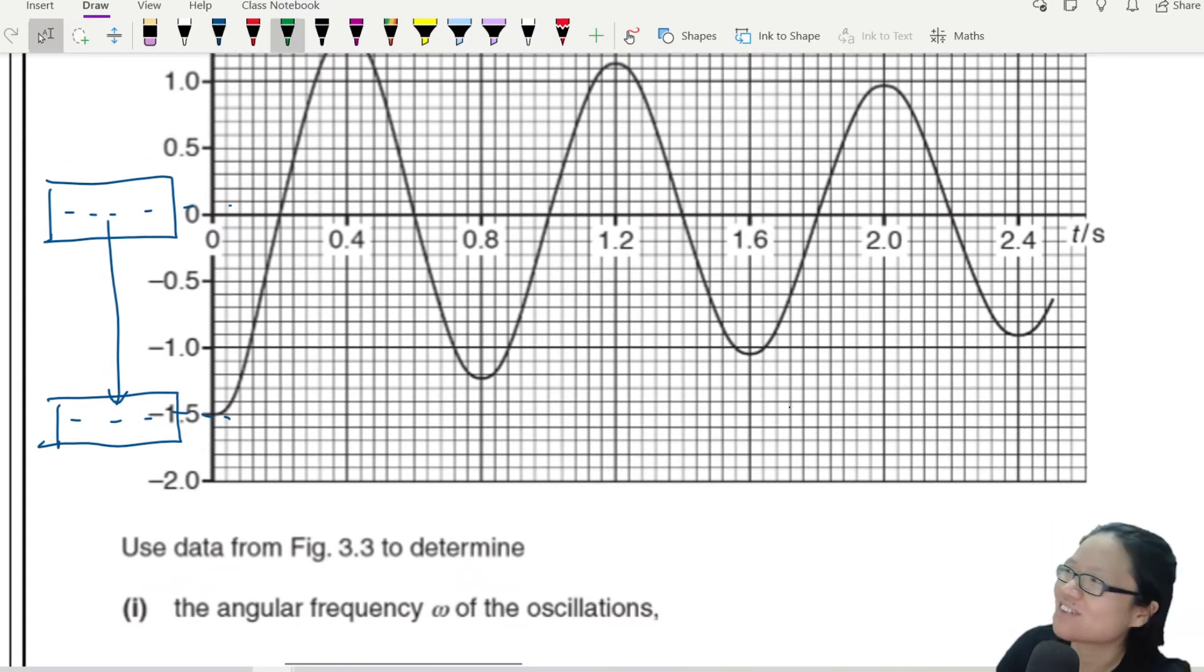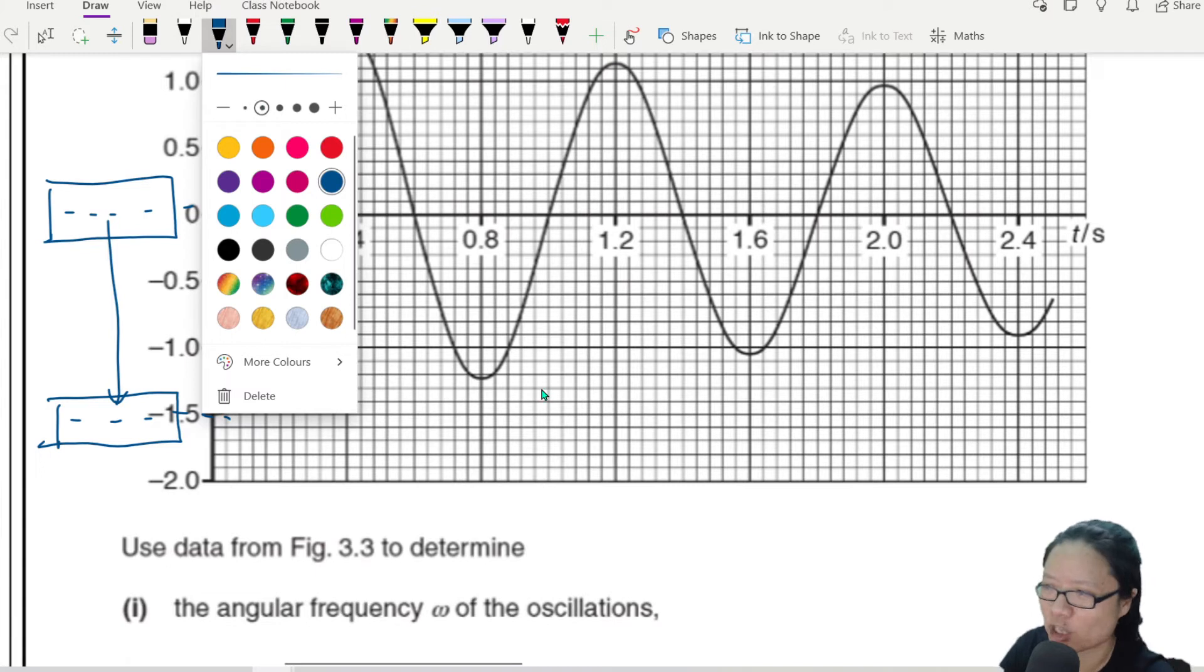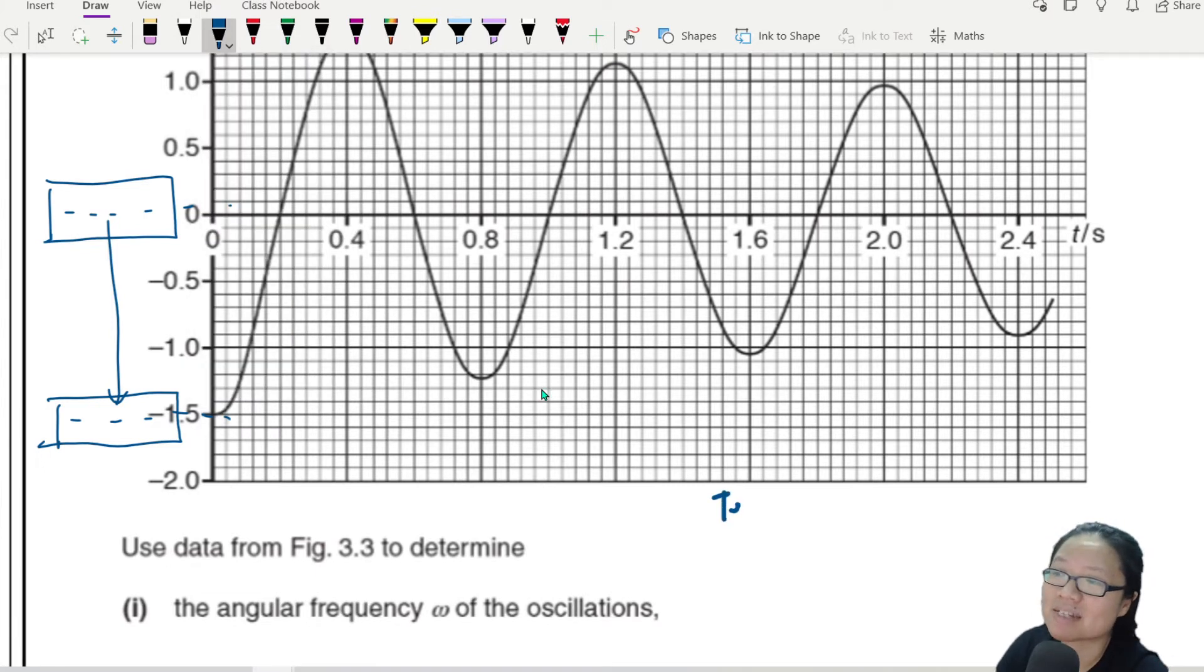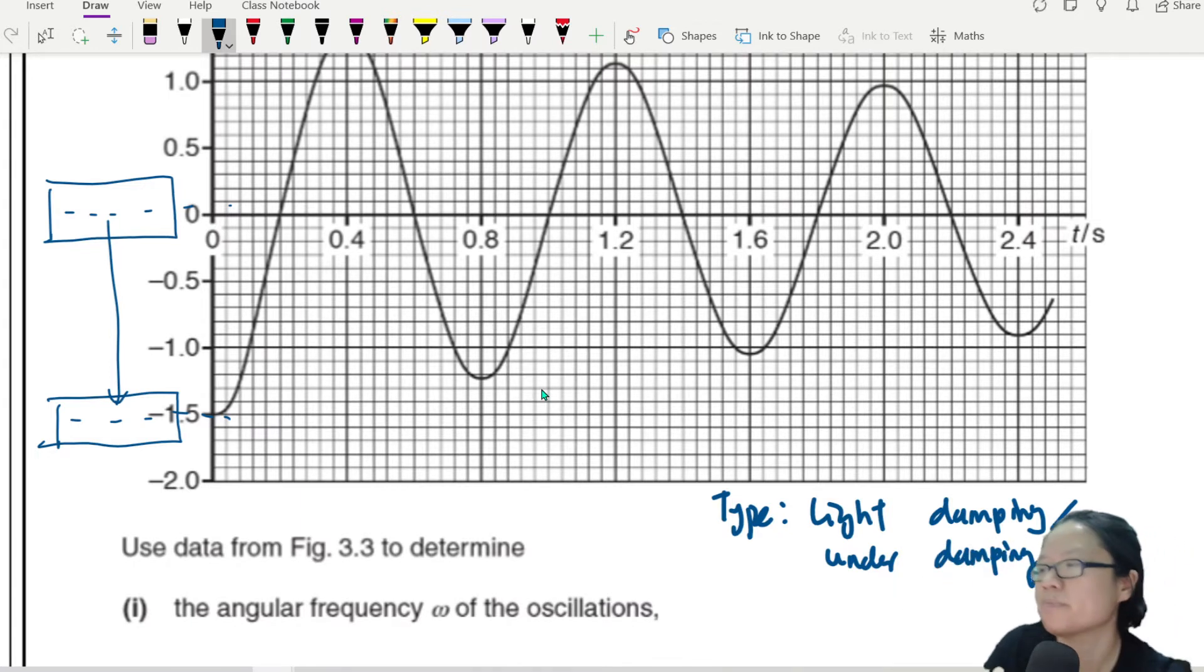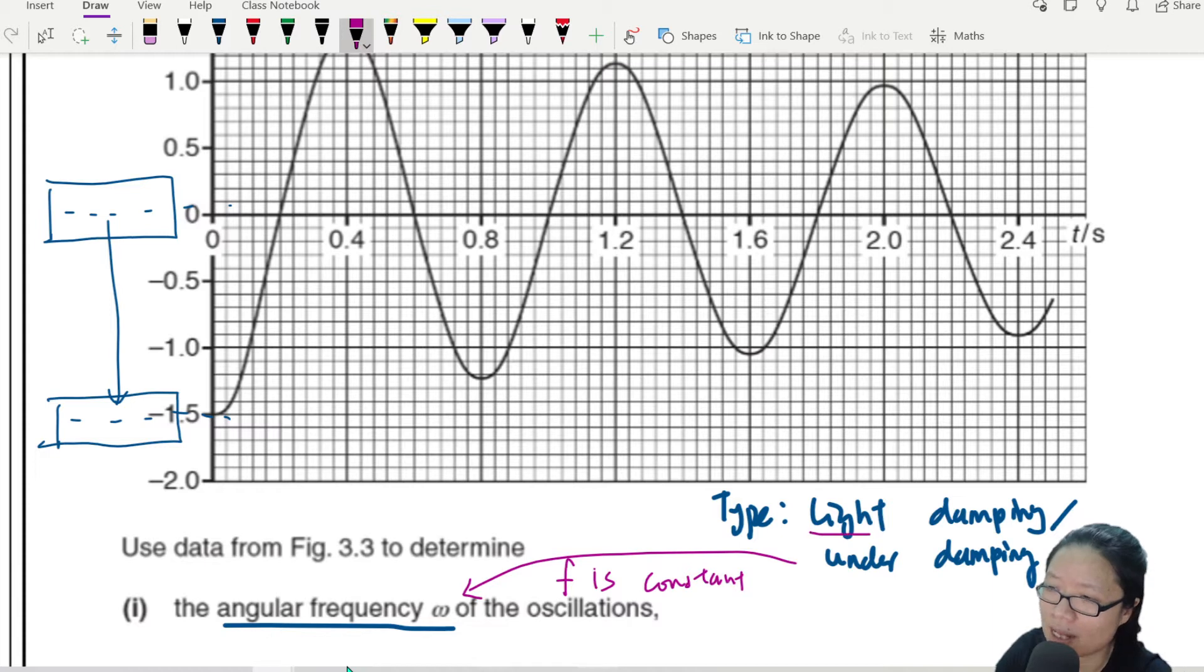I'm very proud of this new information. If you just learned the damping chapter, I'm just going to call this type of damping: light damping, or I guess you could call under damping, because of an exponential decrease and same time period. The question is asking you to use the graph to determine the angular frequency. Since it's light damping, what can we say about the angular frequency? The frequency is constant for light damping.